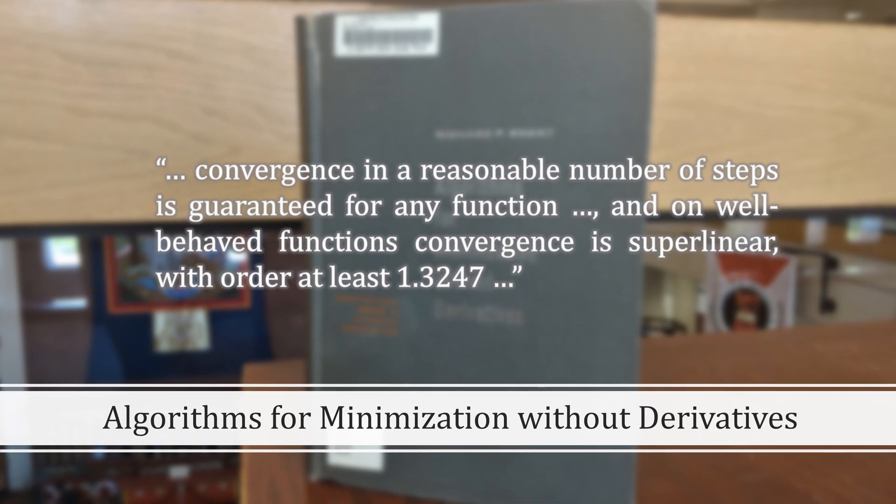Let's look at one final quote from Brent, where he writes, convergence in a reasonable number of steps is guaranteed for any function, and on well-behaved functions, convergence is superlinear, with an order at least 1.325.